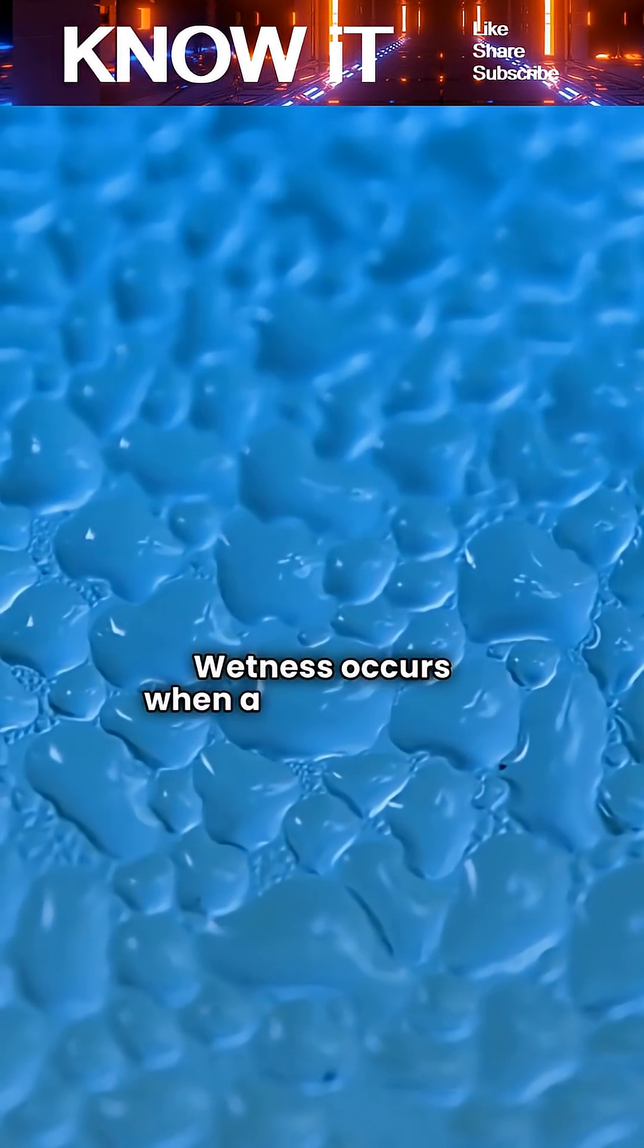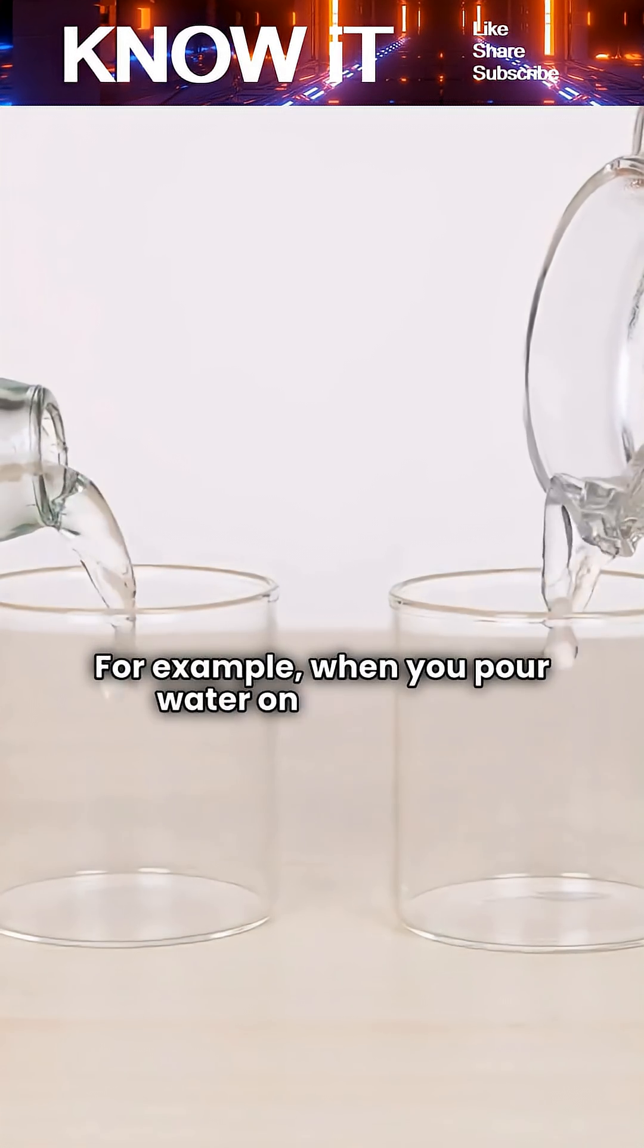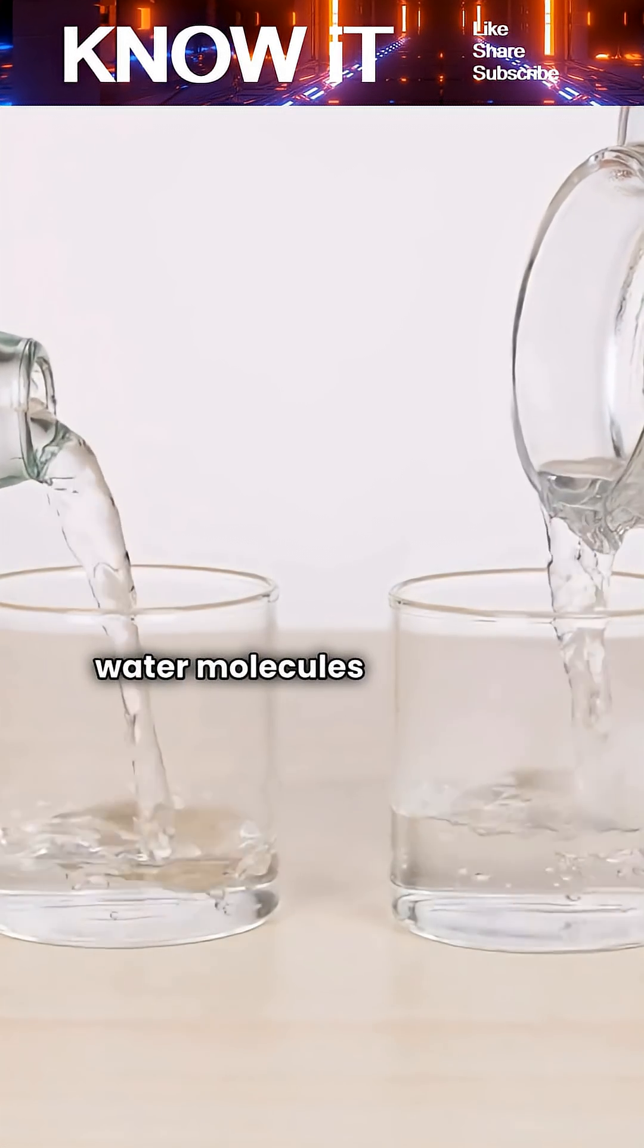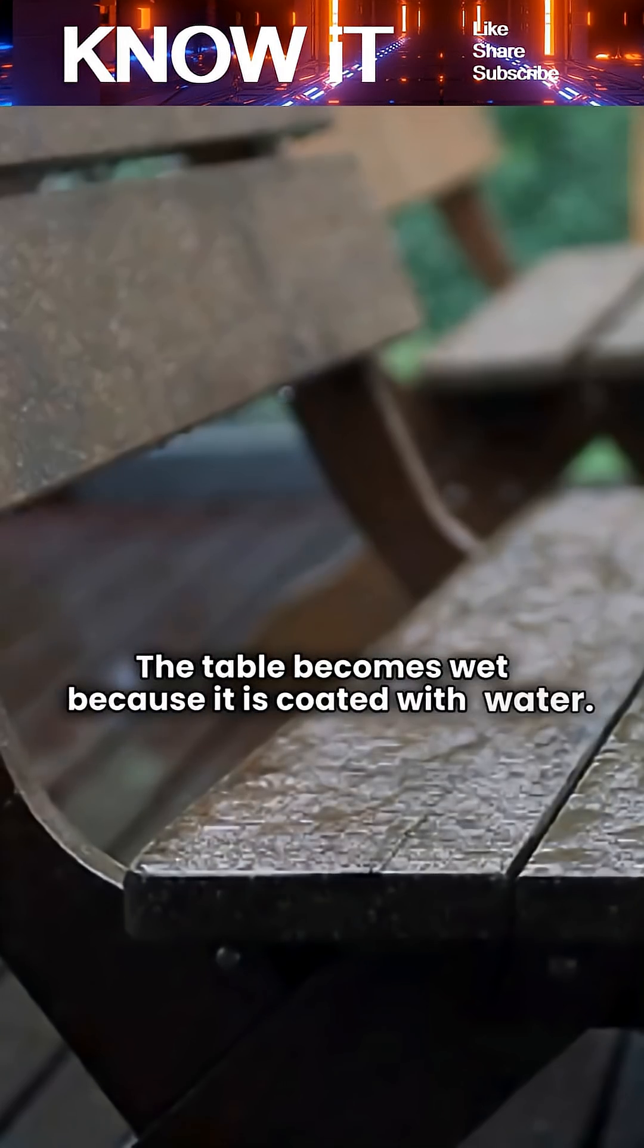Wetness occurs when a liquid adheres to the surface of a solid. For example, when you pour water on a table, the water molecules stick to the table surface, making it wet. The table becomes wet because it is coated with water.